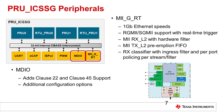Both the MIIGRT and MDIO are upgraded peripherals on the PRU ICSSG. The MIIGRT peripheral now enables gigabit Ethernet speeds and supports MII, RGMII, and SGMII functionality. The MDIO peripheral also adds Clause 22 and Clause 45 support. There are several additional upgrades for both of these peripherals, as shown on this slide.